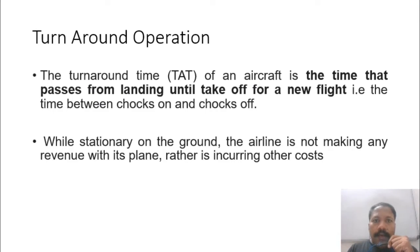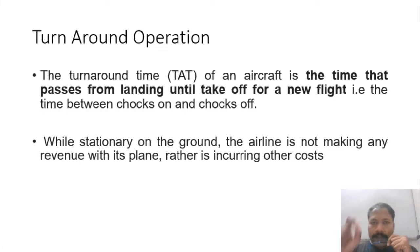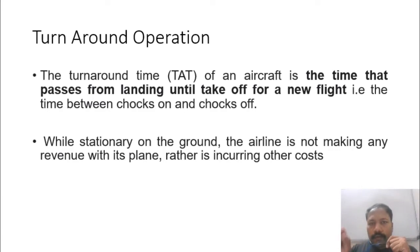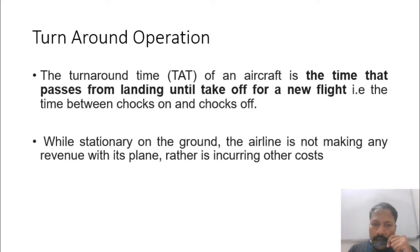So turnaround operation is a set of activities or processes that occur when an airline enters an airport, lands, and completes one journey. The in-between time until the next cycle begins is where turnaround operations take place. There are 10 steps for turnaround operations.